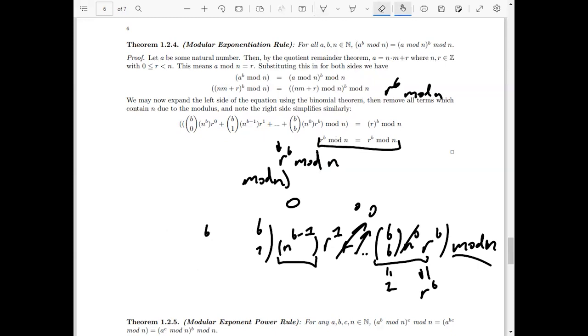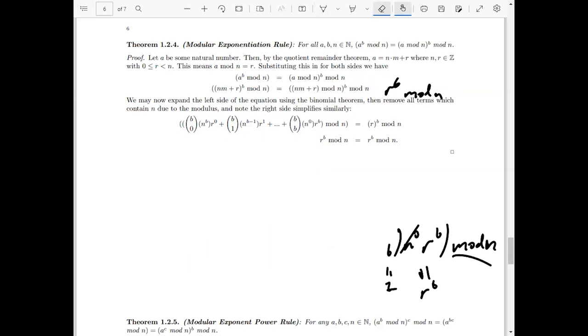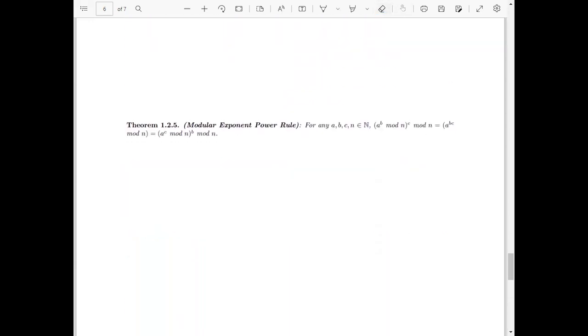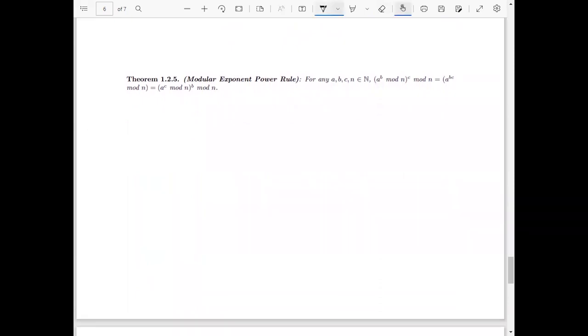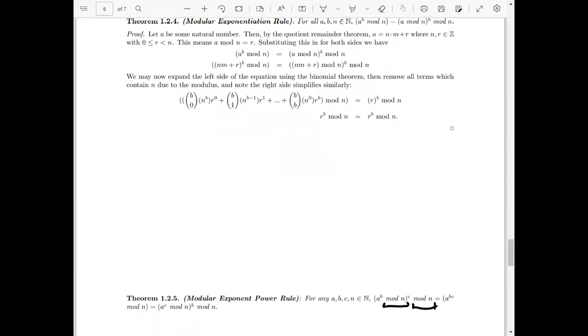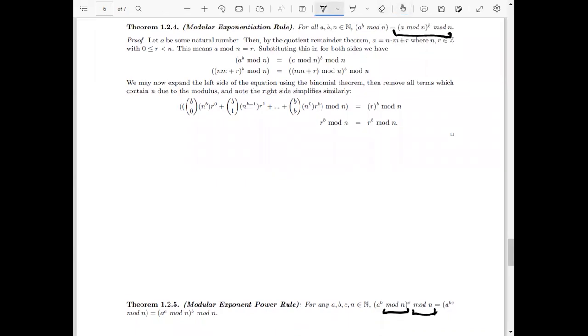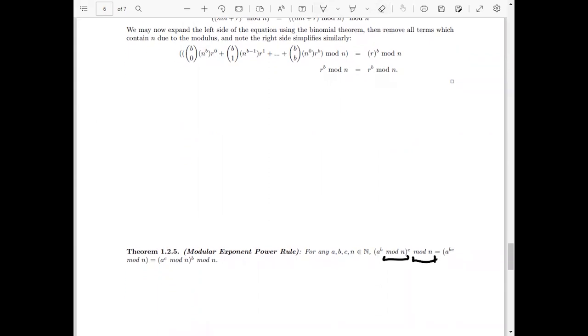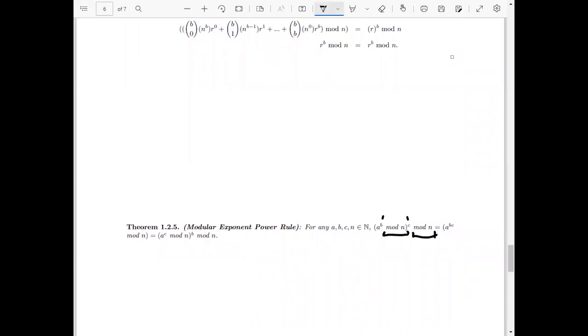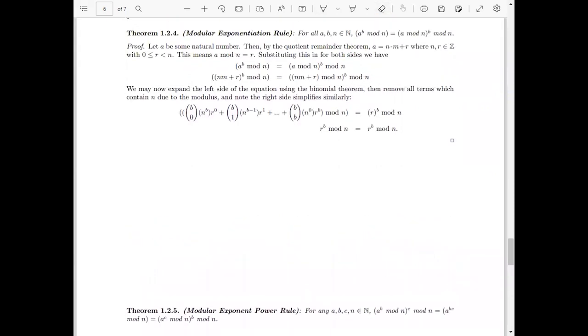And somewhat an expansion of that idea is the modular exponent power rule. We've got the modular exponent power rule, which just states that for any natural numbers, we've got the a to the b mod n to the c mod n. The reason that it's mod n twice is essentially just an expansion of this theorem here. You can see we've got mod n in there twice. A lot of this theorem is just an expansion of the previous one. That's the same as if we had b and c both inside the parentheses, and if we had c inside the parentheses, b outside the parentheses. This theorem is very much just an expansion of the modular exponentiation rule.